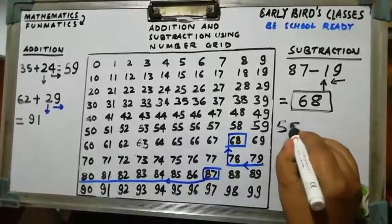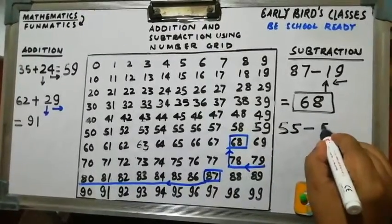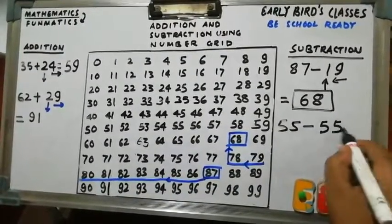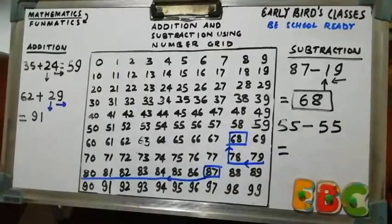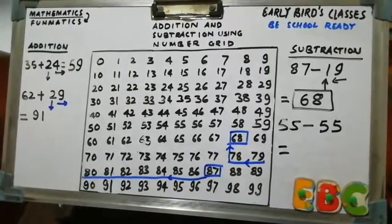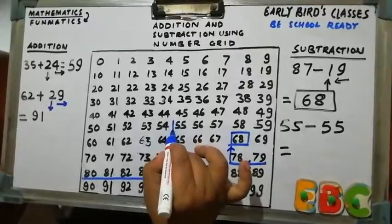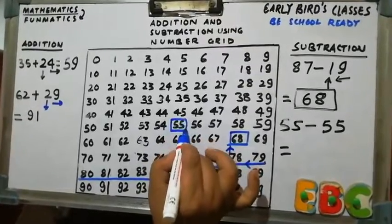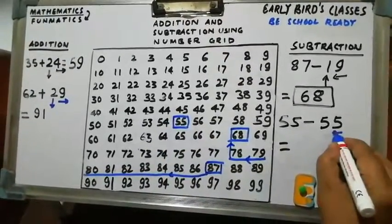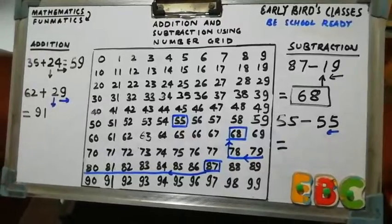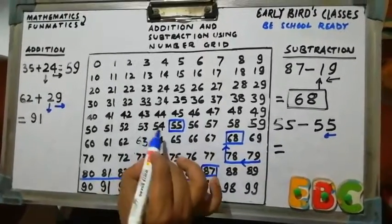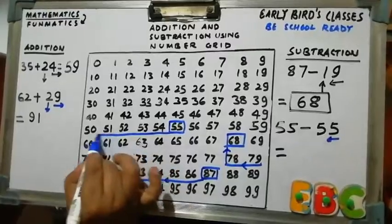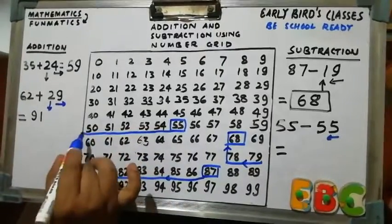55 minus 55. So 55 is here. Here. And we will move 5 places left horizontally. So 1, 2, 3, 4, 5. Where is that? Where? 50.